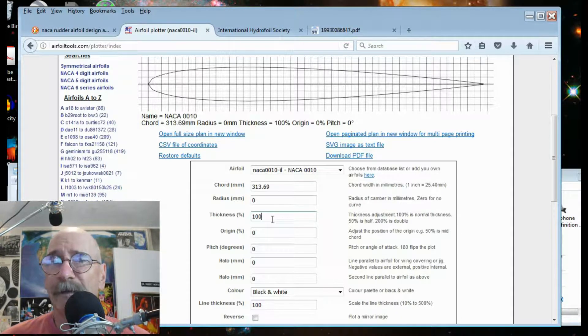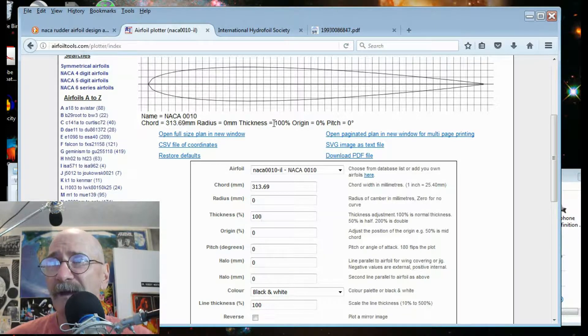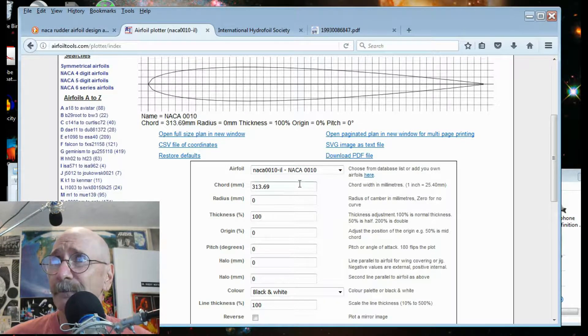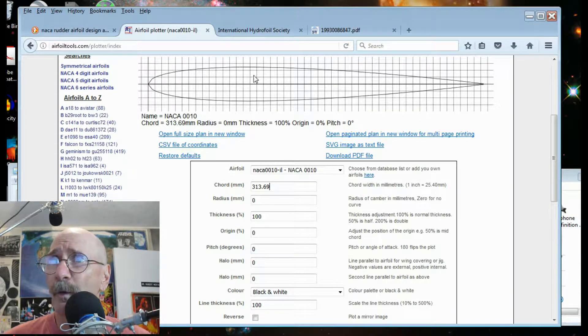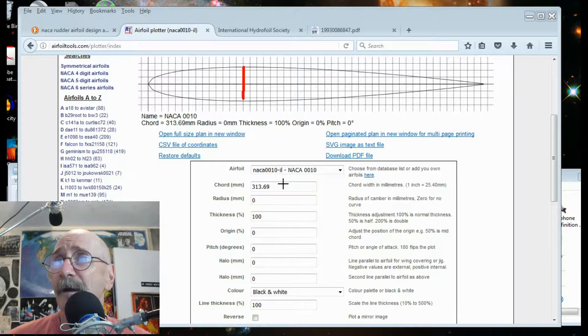If you explore this website, you'll find out a 0010 is just 10% of thickness. So this is, the 0010 is 10% thickness of the chord. So whatever this chord is, the 313.69 millimeters, this is 31.369 millimeters across here. So that's at this point right here, roughly.